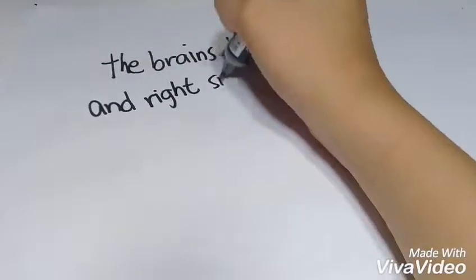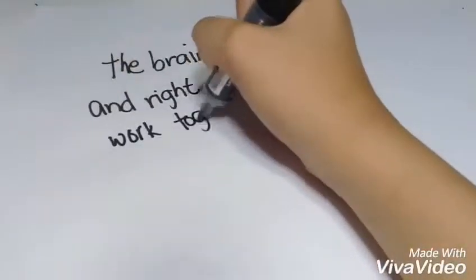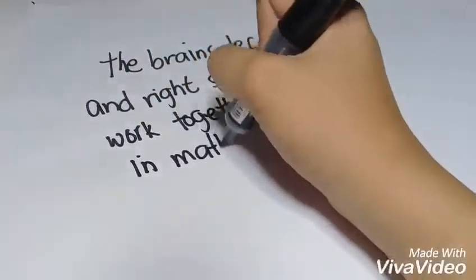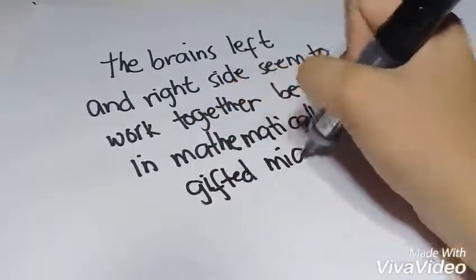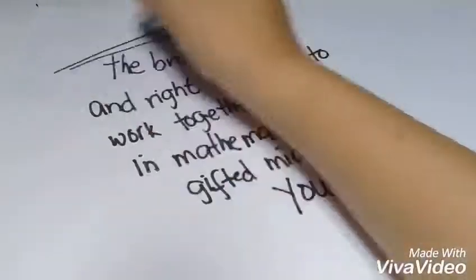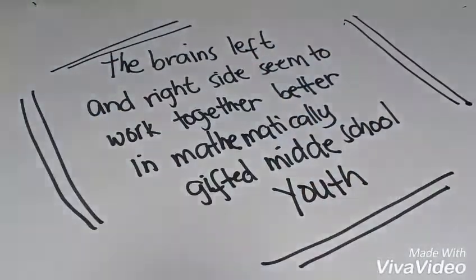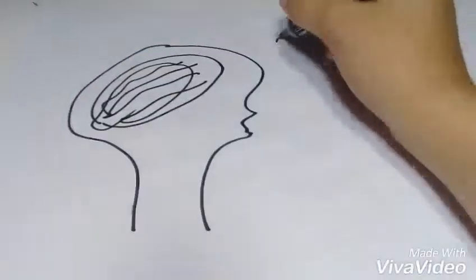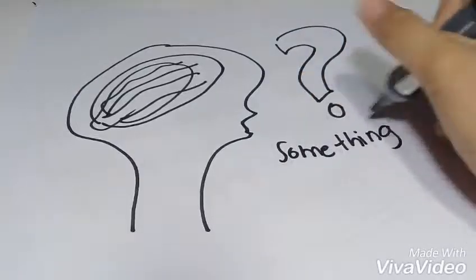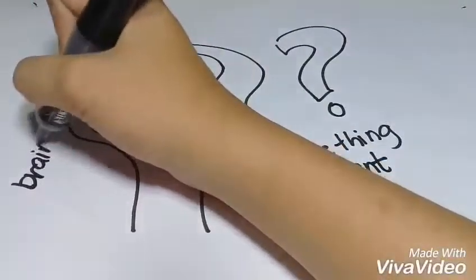A research study found that the brain's left and right side seem to work together better in mathematically gifted middle school youth. There really may be something different about the brains of math heads.